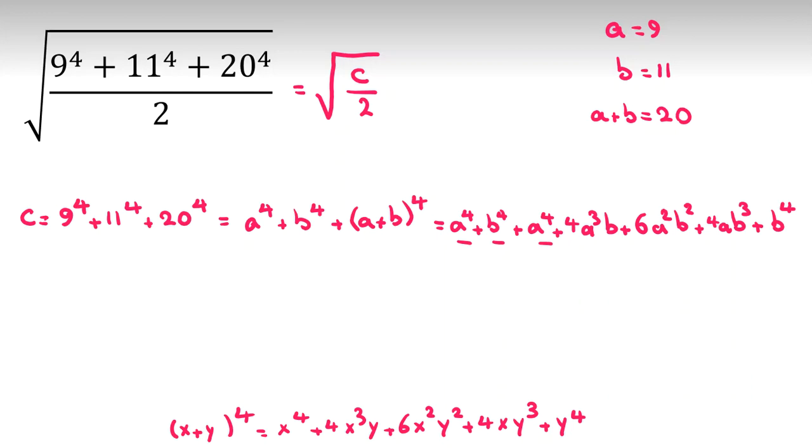Now, from A to the 4, A to the 4, B to the 4. So C will be what? Will be 2A to the 4, 2B to the 4. The rest of the term will be 4A cubed B plus 6A squared B squared plus 4AB cubed.